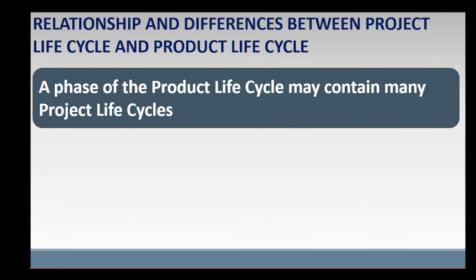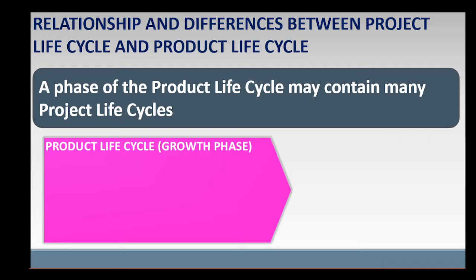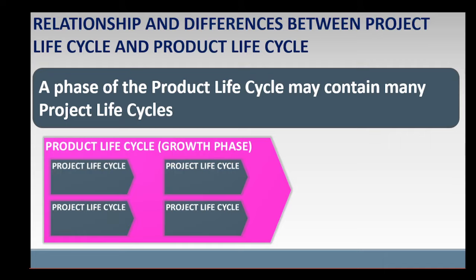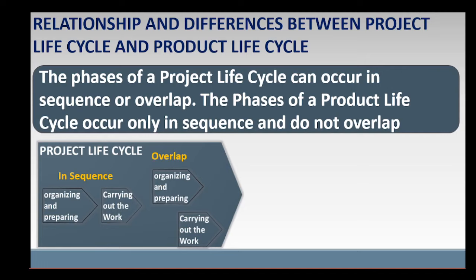A phase of the product life cycle may contain many project life cycles. That is, during the product life cycle, more projects can be undertaken to enhance or create improved versions of the product. For example, factors such as increasing competition, changing market demand, or customer feedback in the growth phase could cause new projects to be undertaken to improve the functionality, quality, and user experience of a product such as a car, smartphone, or software.